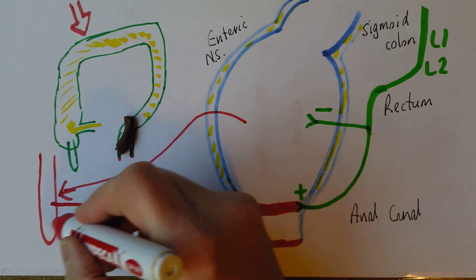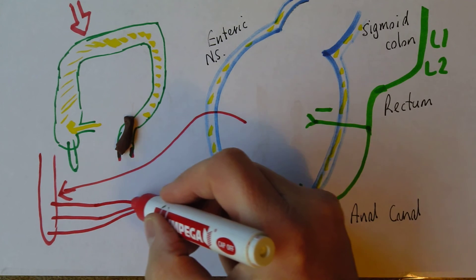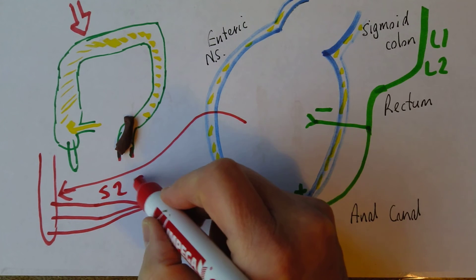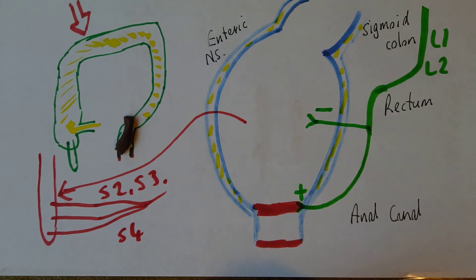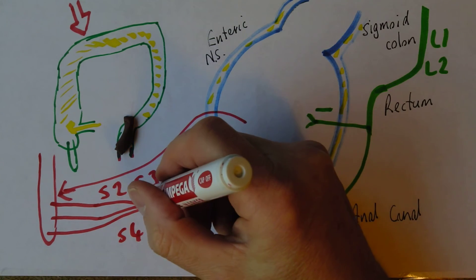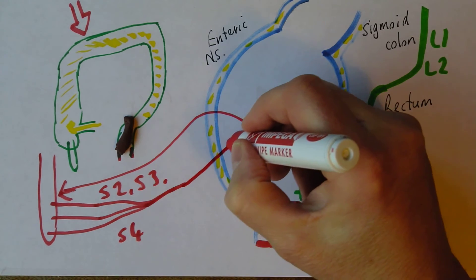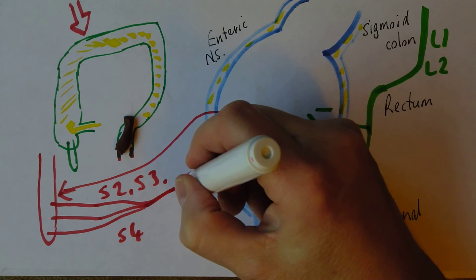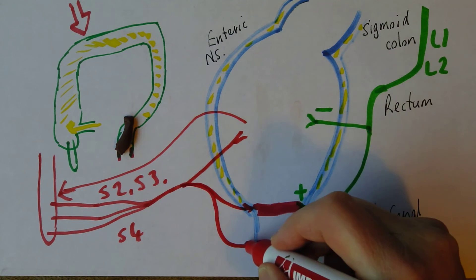Coming back from the spinal cord there are three main nerves that leave: S2, S3, and S4 - the sacral nerves, sacral nerve 2, sacral nerve 3, sacral nerve 4. These approach the rectum and anus. There's a branch that goes off to the muscle of the rectum, another branch that goes off to the internal sphincter, and another branch that goes off to the external sphincter.